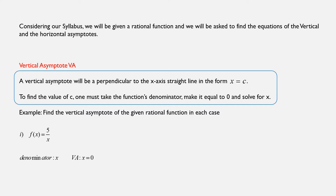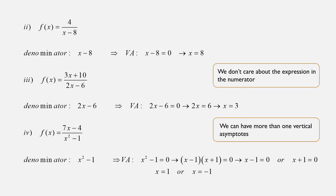For example, given the rational function f(x) equals 5 over x, the denominator is equal to x. So we create the equation x equals 0 and solve it — the vertical asymptote is the line x equals 0. Another example: f(x) equals 4 over (x minus 8). The denominator is x minus 8. Setting it equal to 0: x minus 8 equals 0, which means x equals 8, and that's the equation of the vertical asymptote.